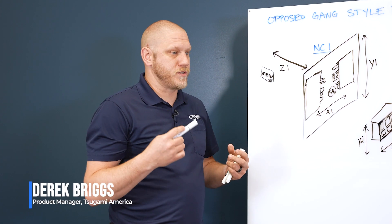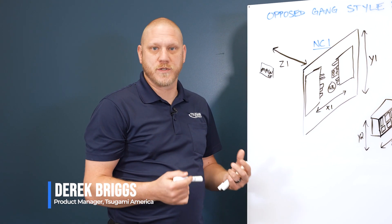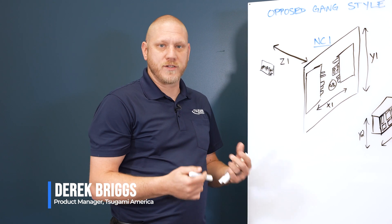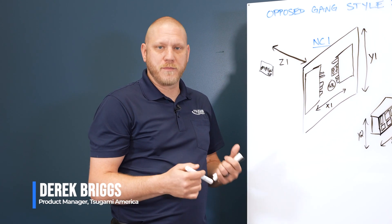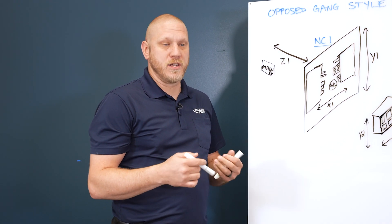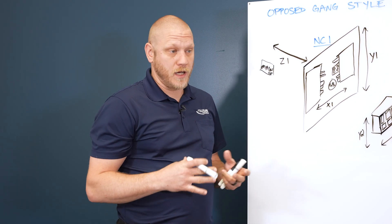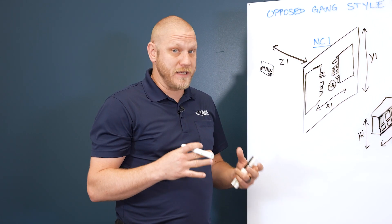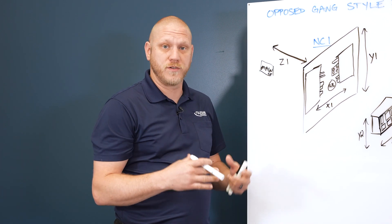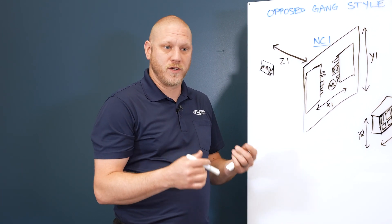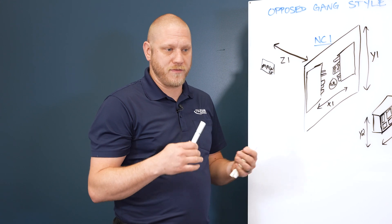I want to go over the axis designations on a Swiss machine. When it gets into multi-path controls and things like that, a lot of people can be intimidated by the number of axes in what we call a crowded tool zone. That's really what makes a Swiss machine very unique is the tight tool zone. It makes it very fast, but it can also be a little intimidating with that many axes.